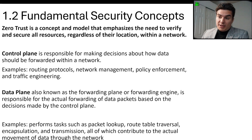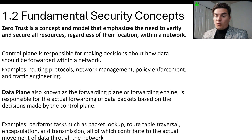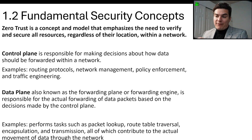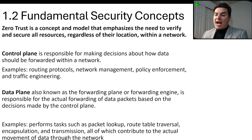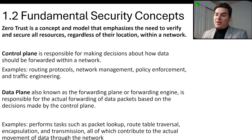There's the control plane, which is responsible for making decisions about how data should be forwarded within a network. Examples include routing protocols, network management, policy enforcement, and traffic engineering. Then there's the data plane, also known as the forwarding plane or forwarding engine, responsible for the actual forwarding of data packets based on decisions made by the control plane.